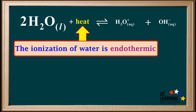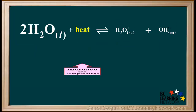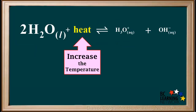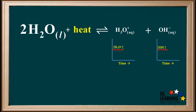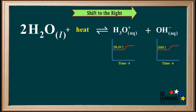Now we'll review how temperature affects the ionization of pure water. Remember this equilibrium exists in all samples of water, and it's endothermic. Increasing the temperature adds heat to this equilibrium system. According to Le Chatelier's principle, the equilibrium will counteract the addition of heat by shifting to the right. As the shift to the right occurs, the hydronium and hydroxide ion concentrations increase. Water is a liquid, so its concentration does not change.